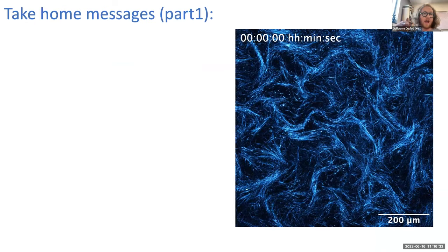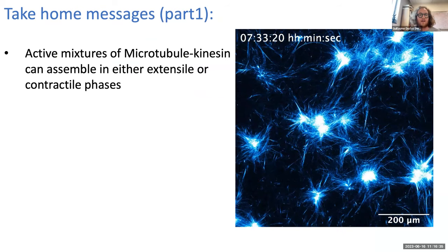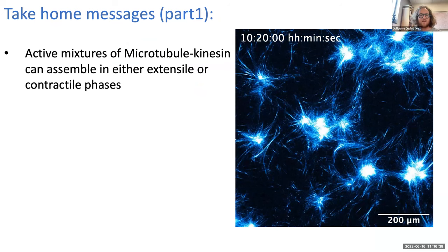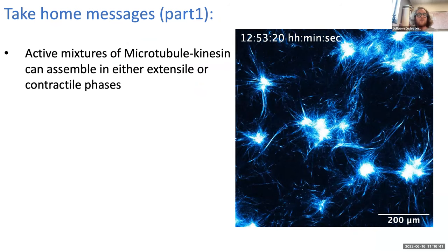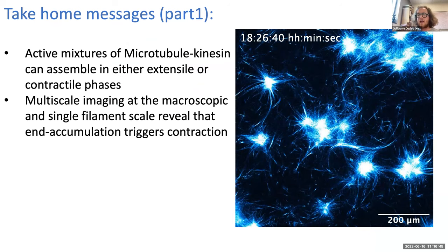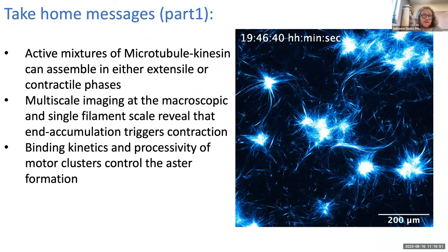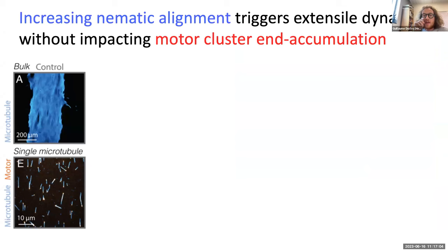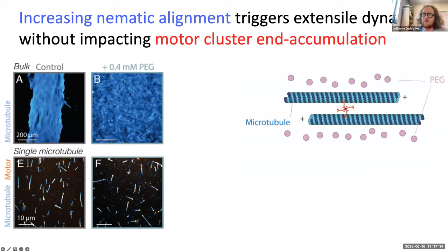The take-home messages so far: active mixtures of microtubules and kinesin can self-assemble in either an extensile phase or a contractile phase. Multi-scale imaging at the microscopic and single-filament scale reveals that motor end-accumulation triggers contraction. The binding kinetics and processivity of motor clusters control aster formation. However, that's not enough to fully explain the transition from extensile to contractile, because increasing nematic alignment — by adding more PEG — drives a transition from contractile back to extensile without impacting how motors are distributed at the microscopic scale.